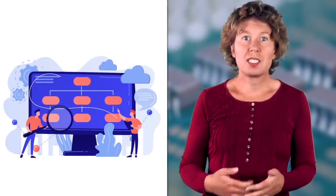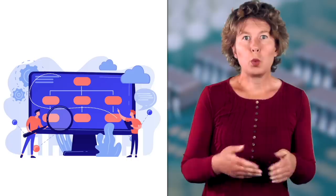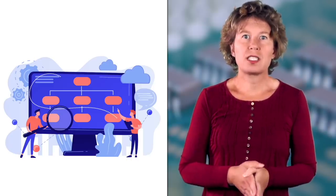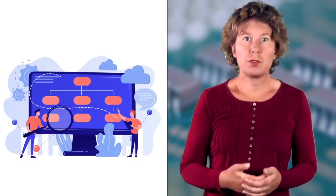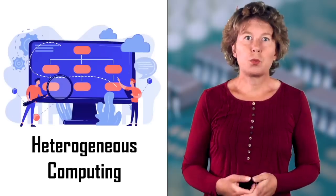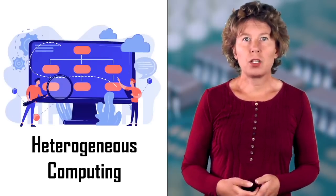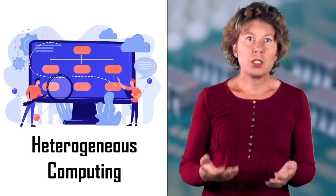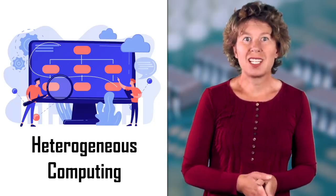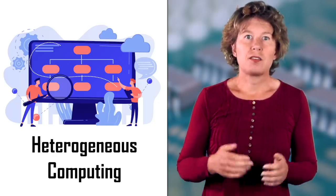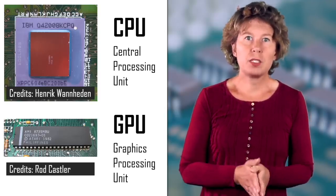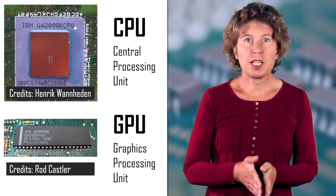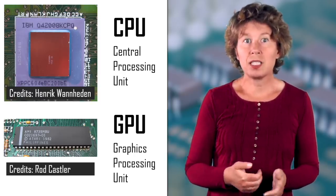One of the current strategies to push the limits of Moore's law is specialization. Rather than relying on one type of processor, you use several ones each for a specific task. This allows computers to run faster and more efficiently. It's called heterogeneous computing and has already been going on for quite some time. For example, your computer almost certainly has two different types of processing units. There's the central processing unit, CPU for short, and the graphics processing unit, GPU for short.